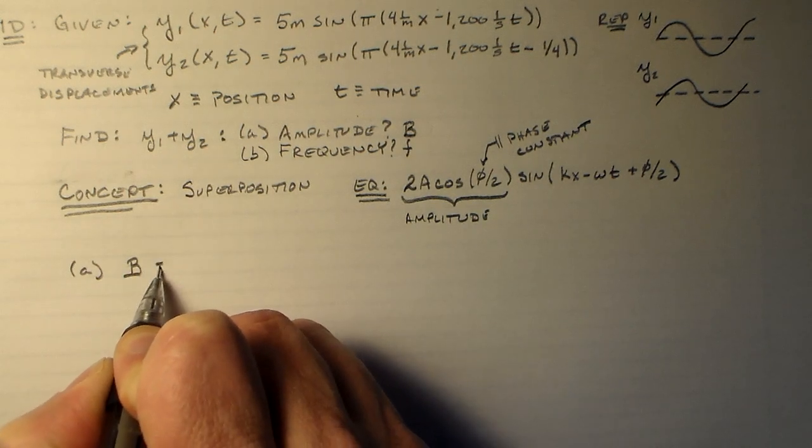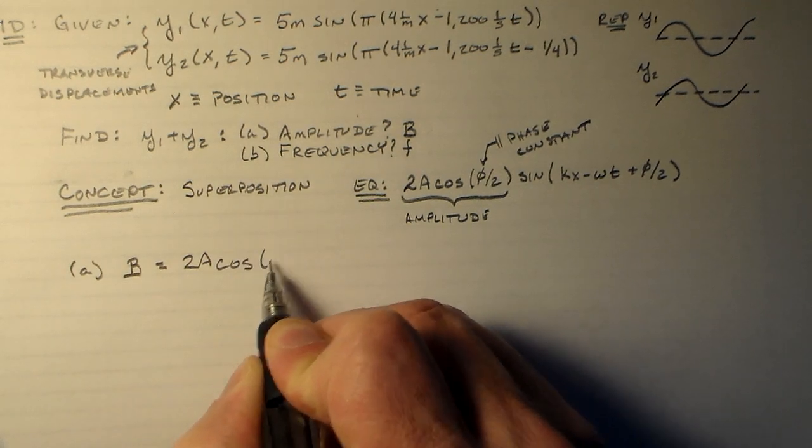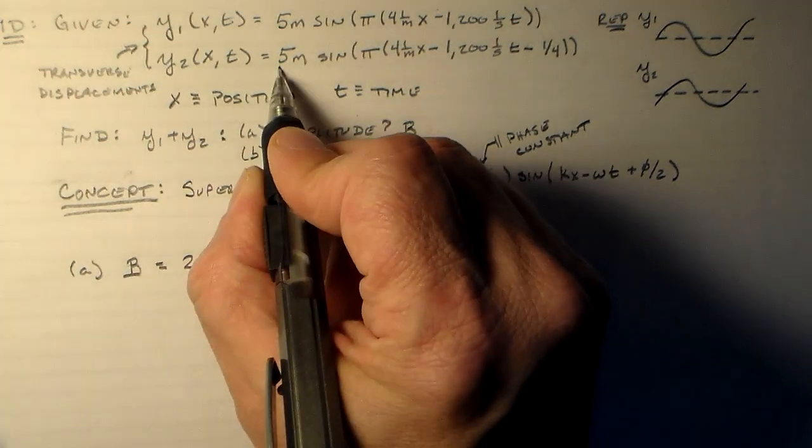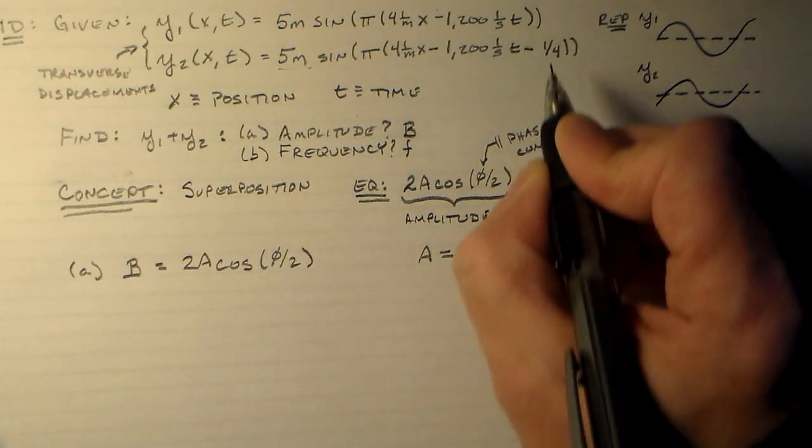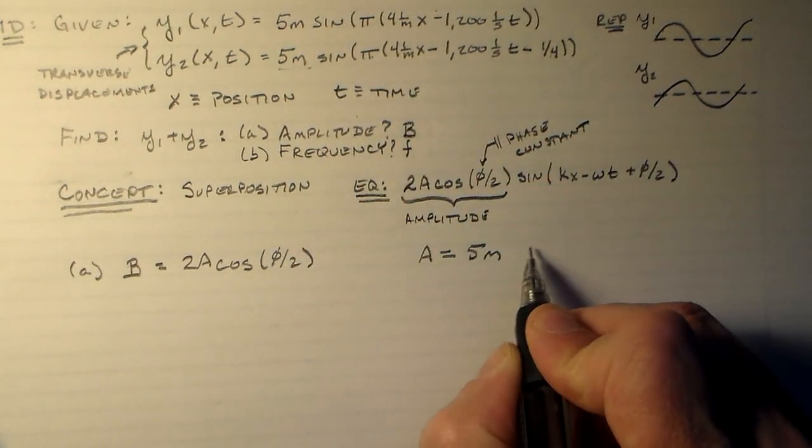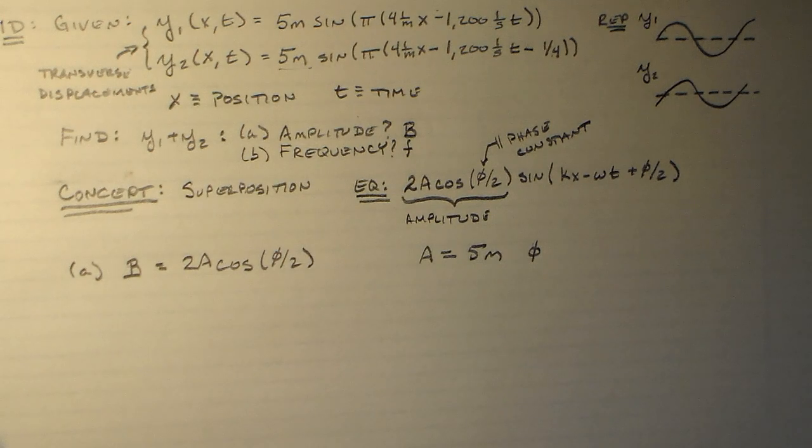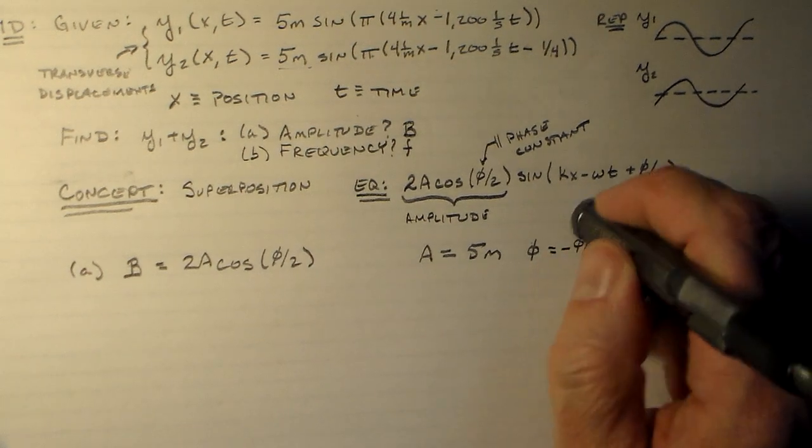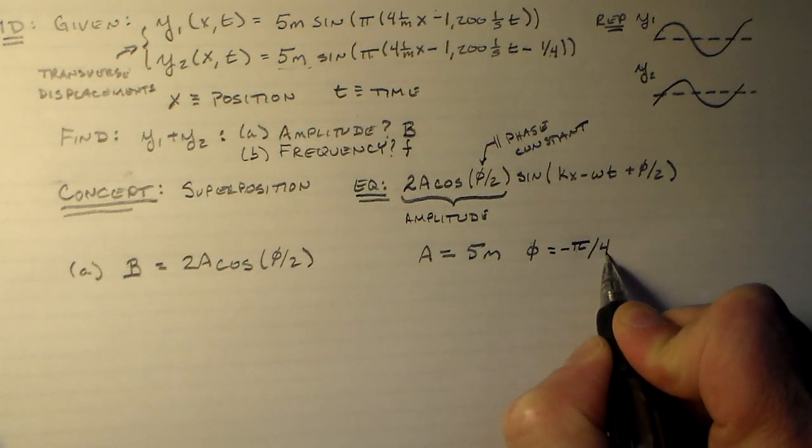B is going to equal 2A cosine phi over 2 with A equal to 5 meters and phi equal to pi over 4. So let me check the definition in the book really quickly because it's a book equation with a plus sign. So phi is actually going to be minus pi over 4. Okay,